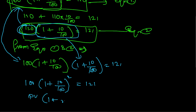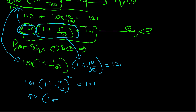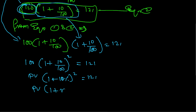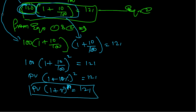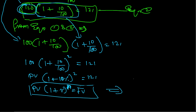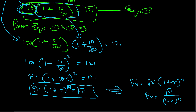So that means present value into 1 plus r — where 10 by 100 is 0.10, which is 10 percent — to the power n is equal to the future value. Therefore, future value is equal to present value into 1 plus r to the power n, and present value is equal to future value divided by 1 plus r to the power n.